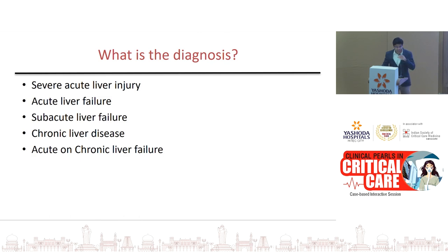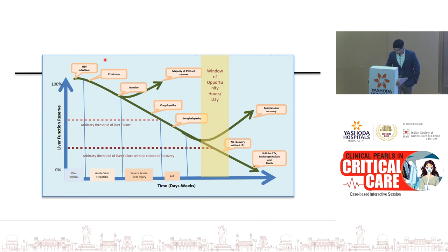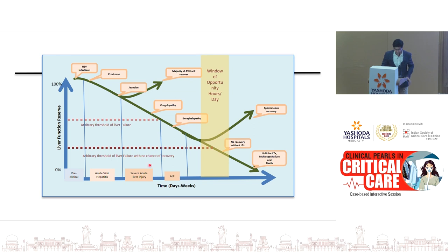What is the diagnosis? Whenever there is liver injury with elevation of liver enzymes and jaundice, this phase is called viral hepatitis. Once coagulopathy sets in due to failure of the hepatocytes, it's called severe acute liver injury. Once encephalopathy sets in it's called acute liver failure — some patients undergo spontaneous recovery and some will require transplant.